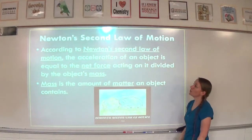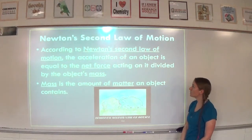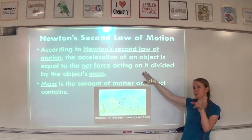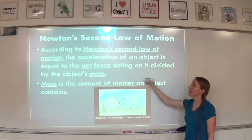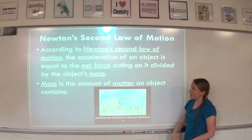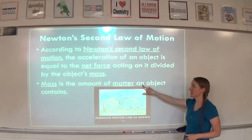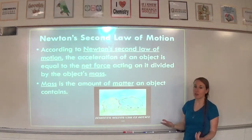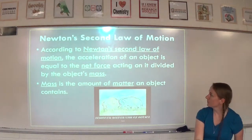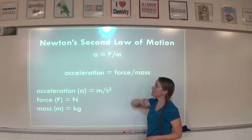Newton's second law of motion states that the acceleration of an object is equal to the net force acting on it divided by the object's mass. Here's where a formula comes into play — we'll plug in and work on some math. Mass is the amount of matter an object contains. So Newton's second law says acceleration equals force divided by mass: A is acceleration, F is force, and M is mass.